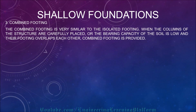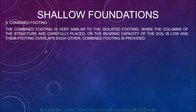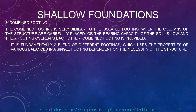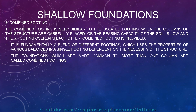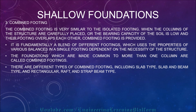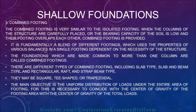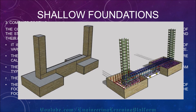The third type of shallow foundation is combined footing. Combined footing is provided when columns are closely placed or when the bearing capacity of the soil is low and individual footings overlap each other. It is essentially a blend of different isolated footings using the properties of various bases in a single footing. Foundations common to more than one column are called combined footing. Types include slab type, slab and beam type, and rectangular raft and strap beam type. They may be square, T-shaped, or trapezoidal. The main objective is uniform distribution of loads, achieved by coinciding the center of gravity of the footing with the center of gravity of the loads to minimize eccentric effects.